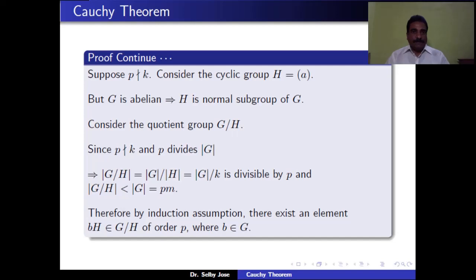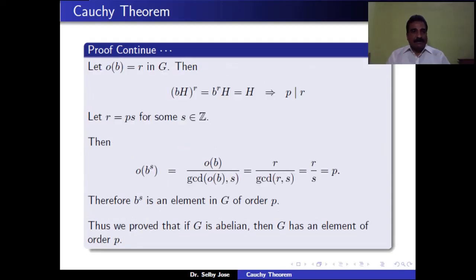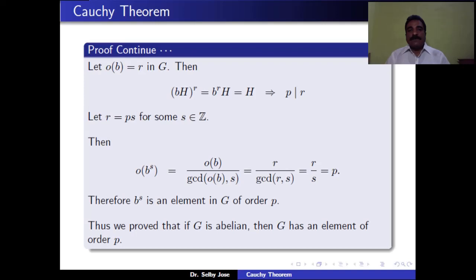Note that B is in G. Let the order of B be R. Then B^R = identity, so (BH)^R = B^R · H = H, meaning P divides R. We write R = P·S for some integer S. Then the order of B^S equals R / gcd(R, S) = R / S = P. Therefore, B^S is an element of G of order P.